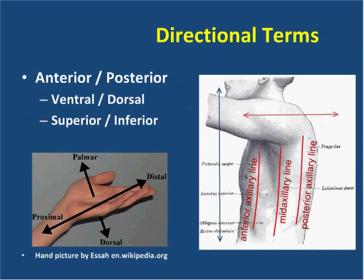We also describe directional terms when looking at the body from the side. You again see the anterior axillary line — the line that runs along the front of the armpit. There's also a posterior axillary line, and splitting those two in half is the mid-axillary line, an imaginary line that runs right down the middle of the armpit. The brown double-headed arrow describes anterior, the front, and posterior, the back. The blue double-headed arrow again describes superior and inferior.